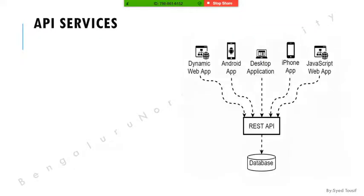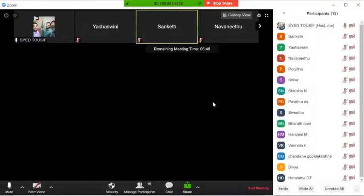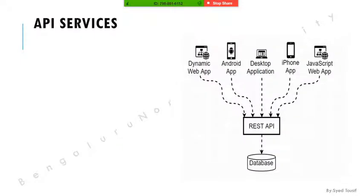Now we come to REST API. After seeing SOAP's drawbacks — especially its slowness — in professional and industry settings we cannot afford that slowness. To overcome SOAP's drawbacks we use REST API. REST API is not a protocol, it's just an architecture — it provides a way of communication.